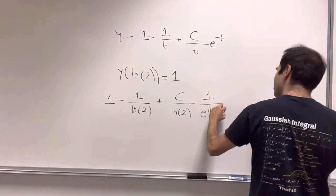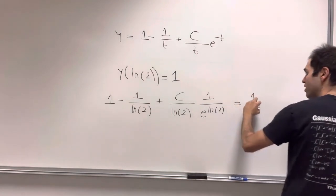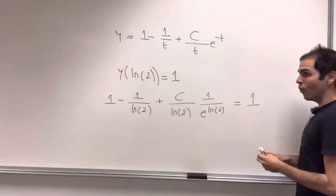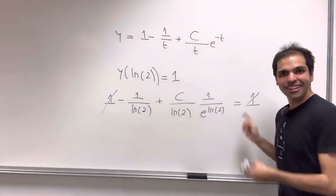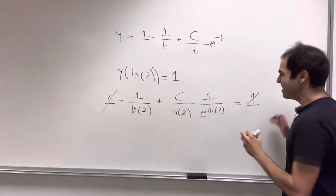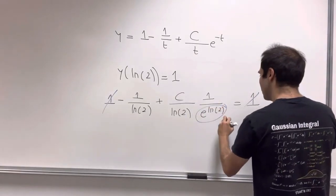ln of 2 gives you 1. And then notice the 1 already cancels up. So you are the 1, but not today. And e of ln of 2, that's just 2.